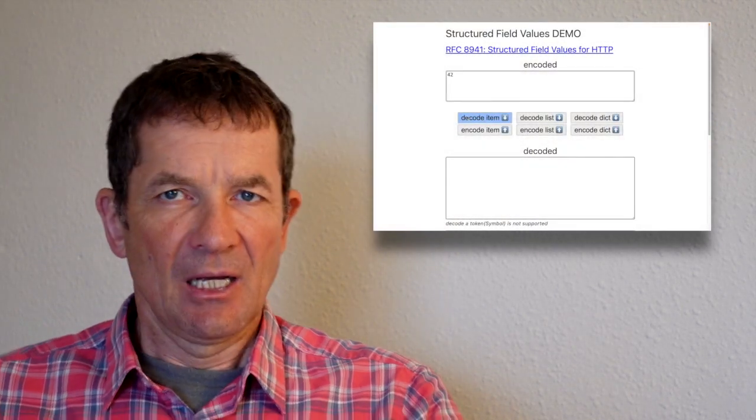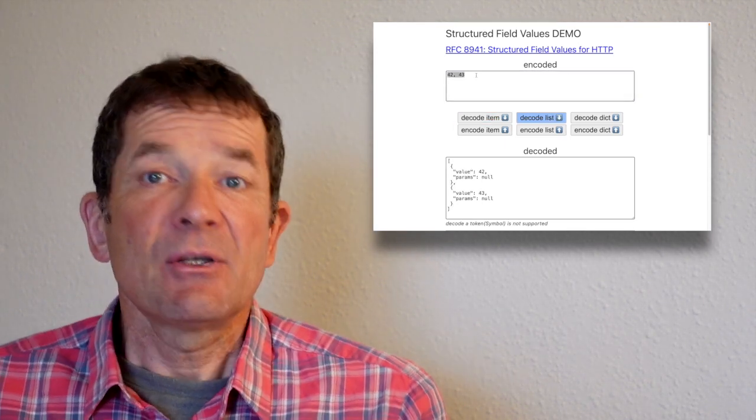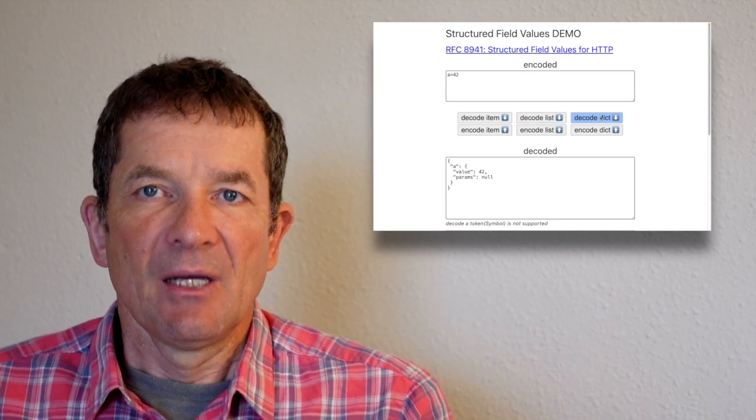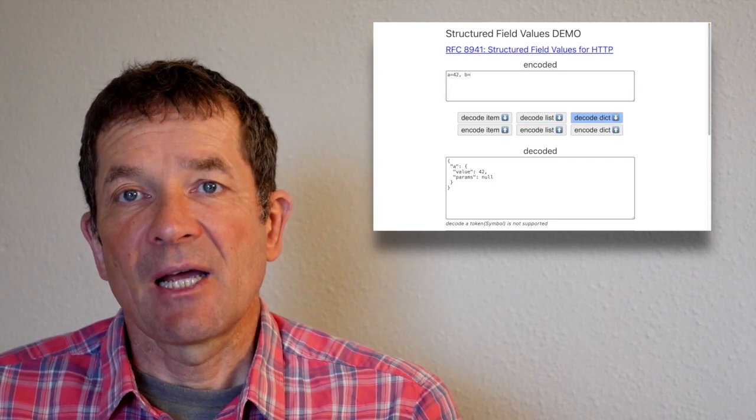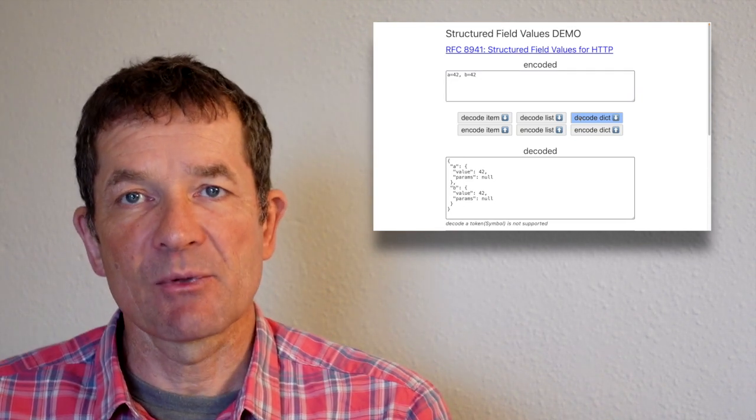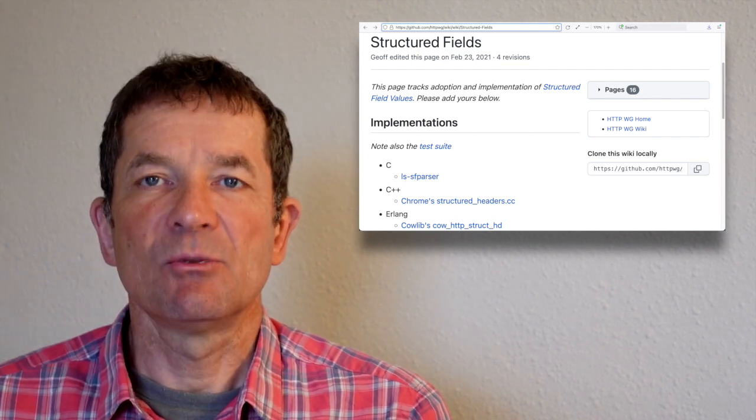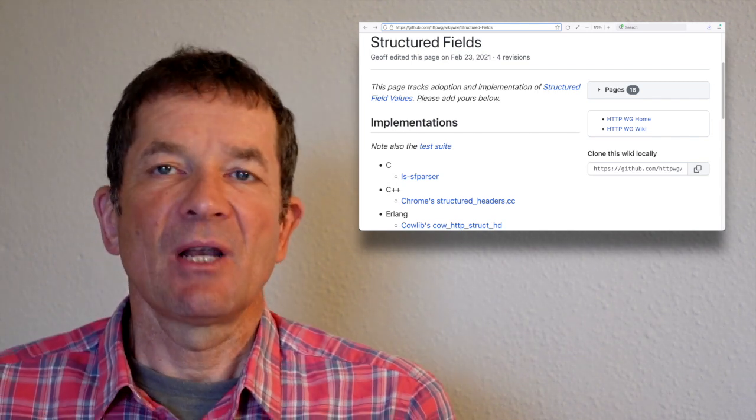Because instead of having to parse these microsyntaxes with having to parse a comma, a semicolon, an equal sign, and is it quoted or not quoted, and these kind of things, you can just use a library that does that for you. There already are quite a number of existing libraries that you can check out. Probably one in your preferred language as well. And this means that if you work with an HTTP header field that uses structure field syntax, please don't write your own code. Instead, look for a library, use the library to parse or serialize values. That will make your life easier.